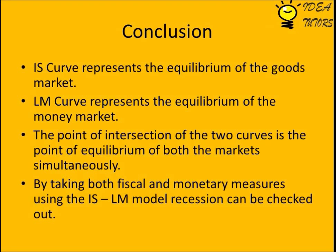To revise: the IS curve represents the equilibrium of the goods market, and the LM curve represents the equilibrium of the money market. The point of intersection of the two curves is the point of equilibrium of both markets simultaneously.